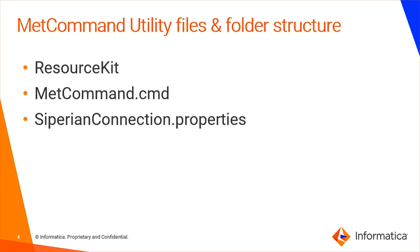The next file is the siperian_connection.properties file. This properties file contains the parameters needed to communicate with the MDM hub console. It mainly contains settings for making a connection via EJB or HTTP, parameters related to the app server — whether you are using JBoss, WebSphere, or WebLogic — and credentials like username and password to connect to the MDM hub console.